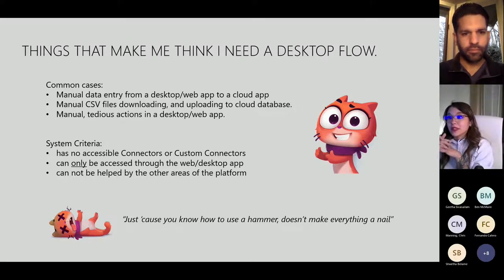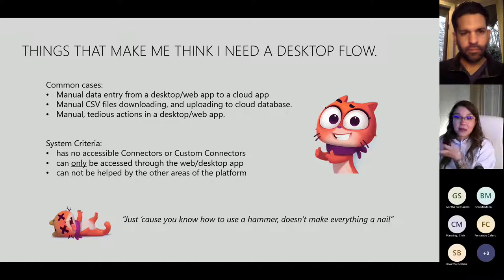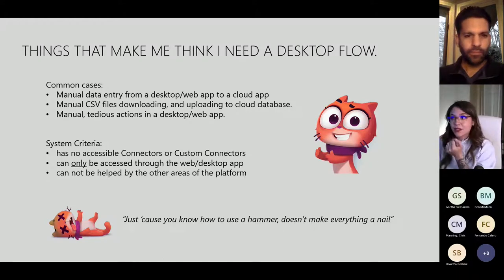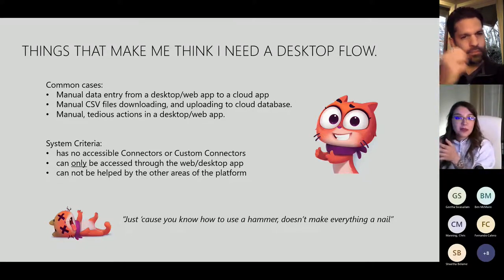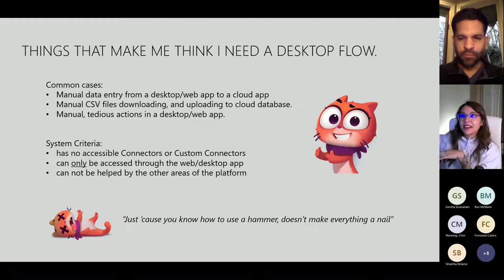The system should only be accessible through a web or desktop app. For example, I use a to-do app called TickTick that's only accessible through the web or desktop — it doesn't integrate with Outlook — so that's where I'd pull in RPA to shift things around and use flow to block my calendar. When all else fails and nothing else fits the platform, I revert to desktop flow. Think of it like a card in your back pocket: if you need to pull it out, you have it.